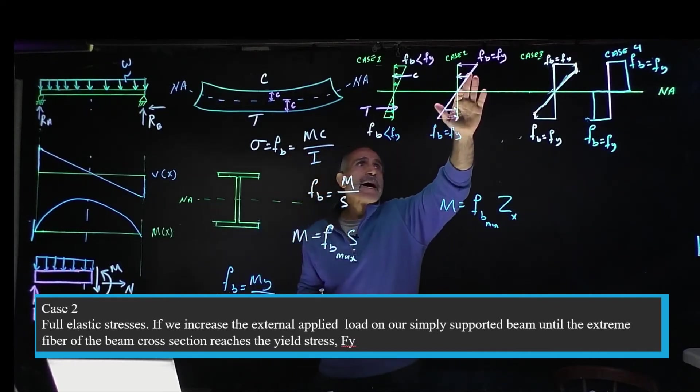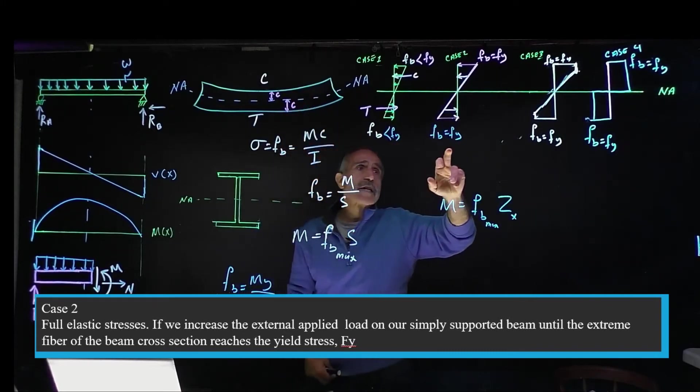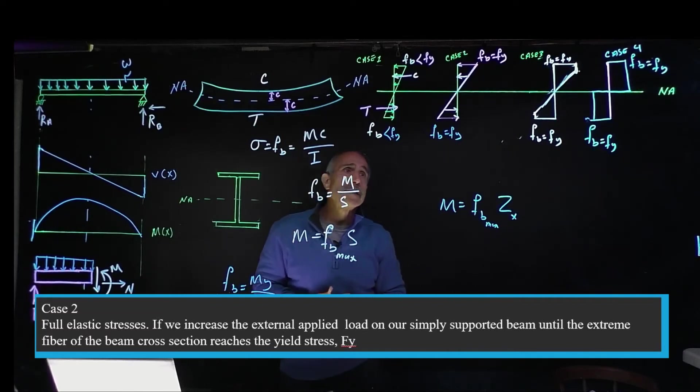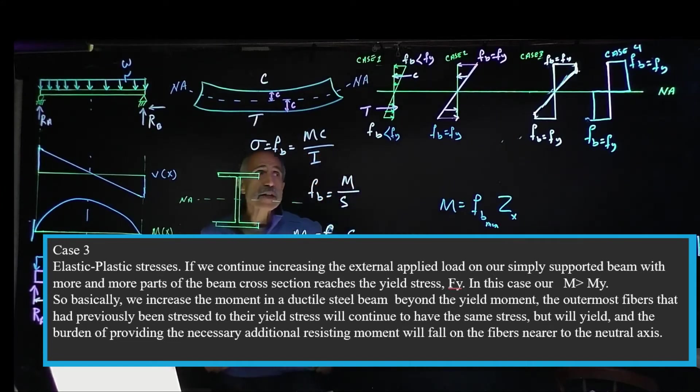If I do that until I get to the yield point, I max out at both points. My compression and tension are going to become equal to F_Y, the yield stress. Let's continue to Case 3. I'm going to increase the load and go beyond where we are.